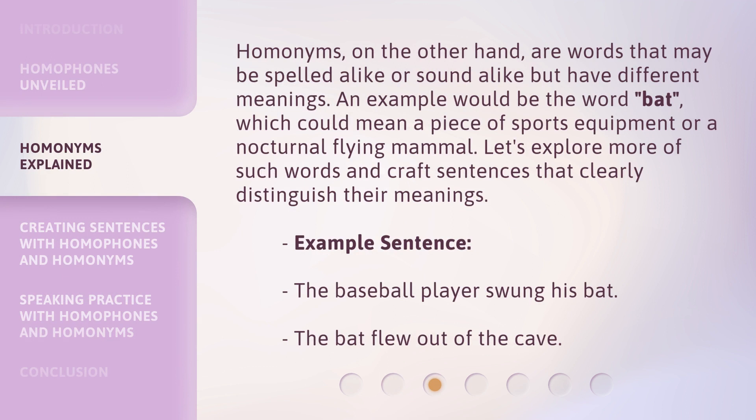Homonyms, on the other hand, are words that may be spelled alike or sound alike but have different meanings. An example would be the word 'bat,' which could mean a piece of sports equipment or a nocturnal flying mammal. Let's explore more of such words and craft sentences that clearly distinguish their meanings. Example sentences: 'The baseball player swung his bat.' 'The bat flew out of the cave.'